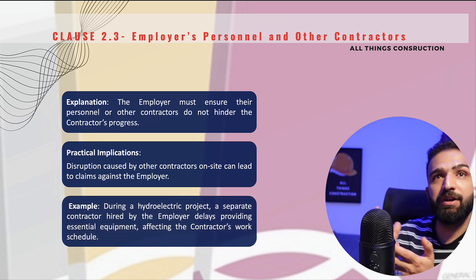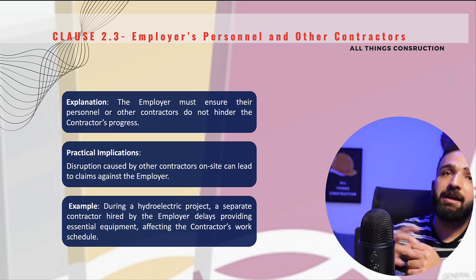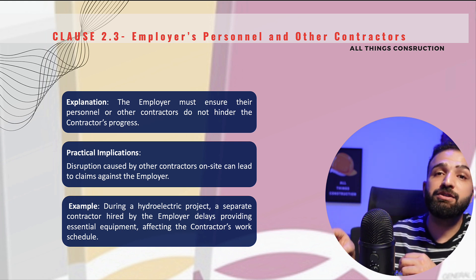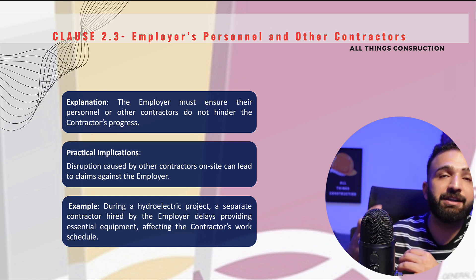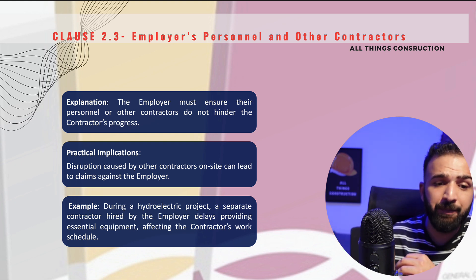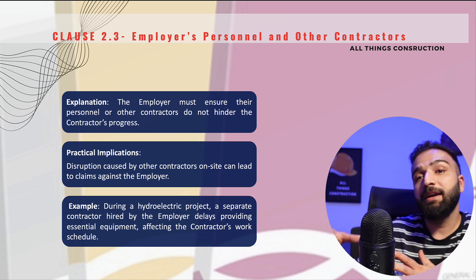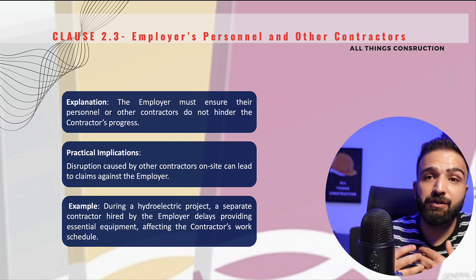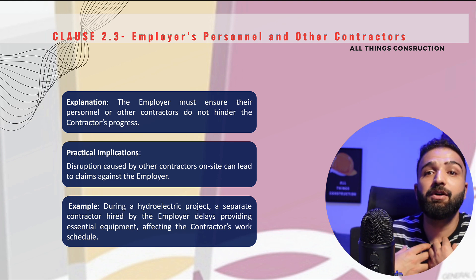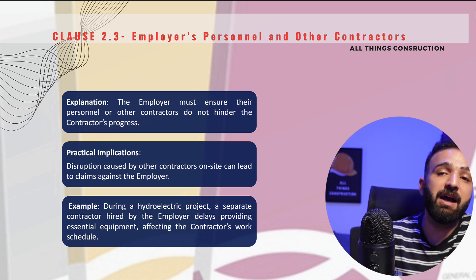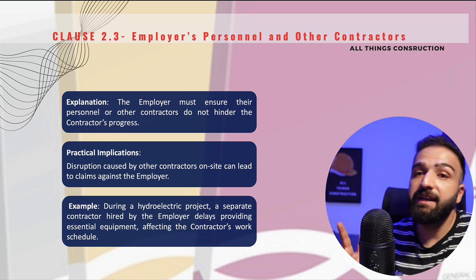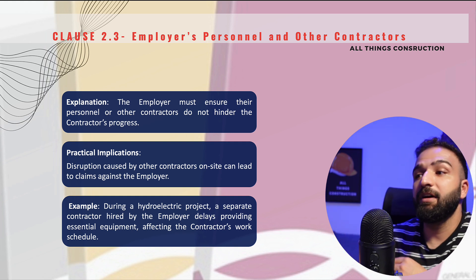For example, during a hydroelectric project, the employer hires a contractor to supply essential equipment such as cranes. This contractor fails to supply these things on time, meaning I am unable to work as the main contractor. In this case, I will submit claims towards the employer.